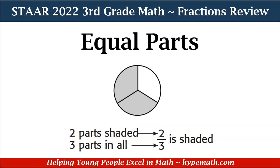Here we have a circle and we see that the circle is divided into three equal parts. Immediately I know that that is my denominator because those are the parts that make up all of the whole of the shape and also of the fraction. So my denominator is three. Looking at the shaded parts, we see that there are two shaded parts in the circle. So two will be our numerator, and the fraction for our shaded parts is two thirds.